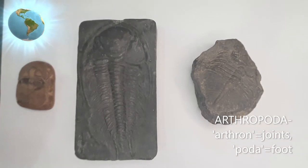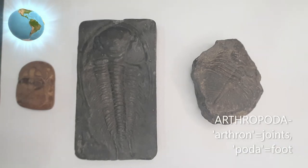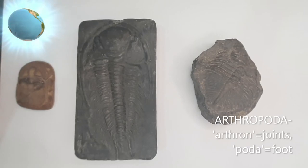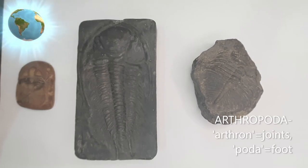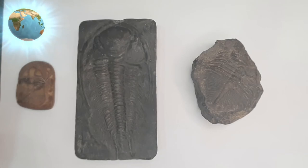To understand the meaning of Arthropoda, it is split into two Greek terms: Arthron means joint, and Poda means foot. So the animal appears to have jointed feet or appendages. All insects are classified under this phylum.